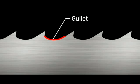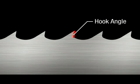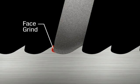The valley between the teeth is called the gullet. The part that runs uphill to the point of the tooth is called the back angle. The area that drops immediately after the point is called the hook angle. The area where the wheel contacts the hook angle is called the face grind, and where it contacts the back angle is called the back grind.